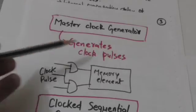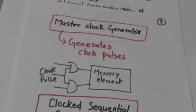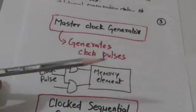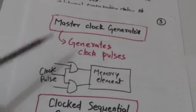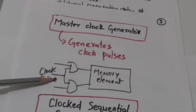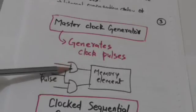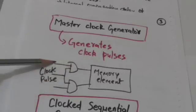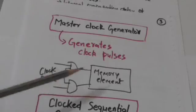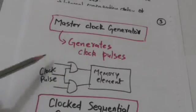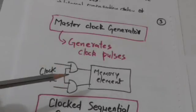Memory elements are affected only with the arrival of clock pulses. Clock pulses are applied to AND gates together with the signals which affect the state of memory elements. The AND gate outputs can transmit only at instants which coincide with the arrival of clock pulses.